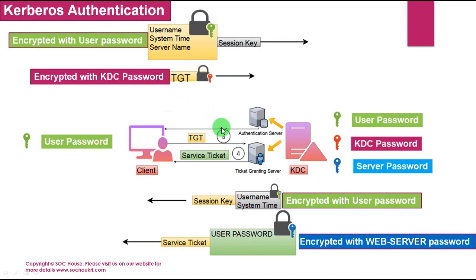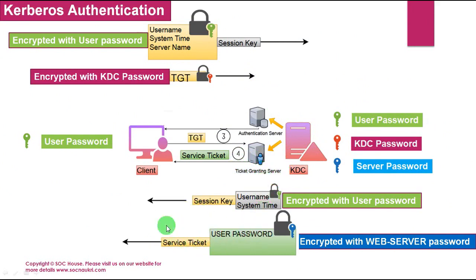The Ticket Granting Server decrypts the TGT ticket with its KDC password and verifies that it was generated by the KDC server, and also finds the user identity. It confirms the user identity has already been verified by the Authentication Server in the previous step, and finds the server information that the user wants to access. The TGS then sends a service ticket containing the user information, encrypted with the password of the requested server.